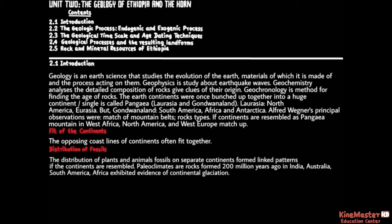Alfred Wegener's principal observations included the match of mountain belts and rock types. The continents resemble pieces of Pangaea — mountains in West Africa, North America, and West Europe match up. The opposing coastlines of continents often fit together. Additionally, the distribution of plant and animal fossils on separate continents formed linked patterns.